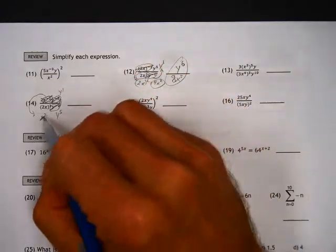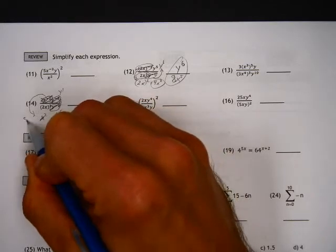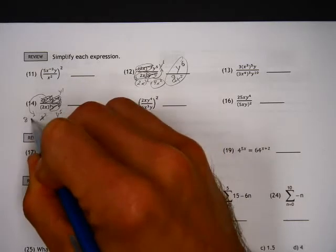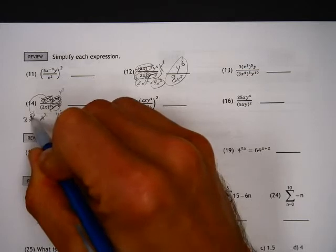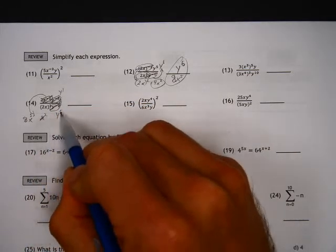And then unfinished business here is this 2 to the third, which is 8. And x to the third, which obviously is x to the third. So now I've got 8x to the third, x squared. And y to the fifth on the bottom.